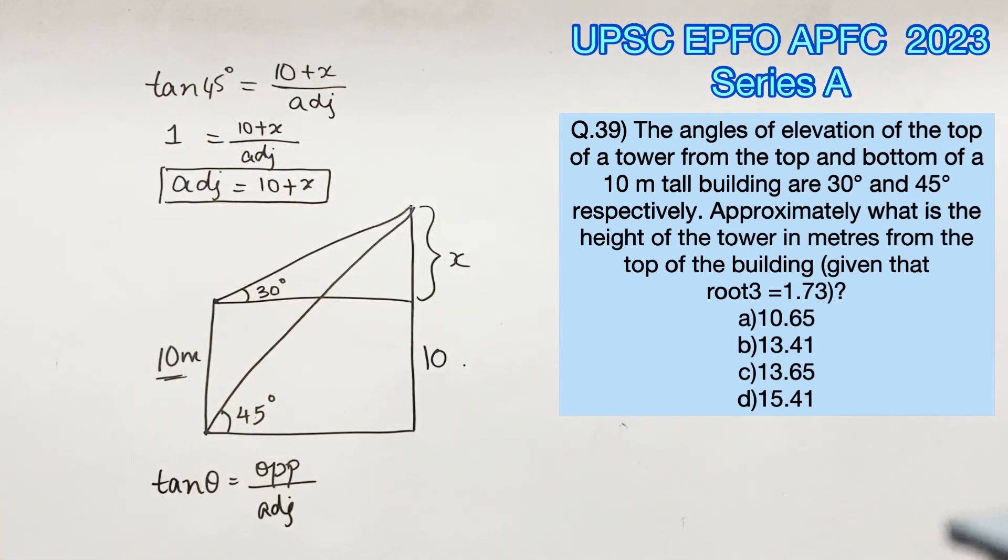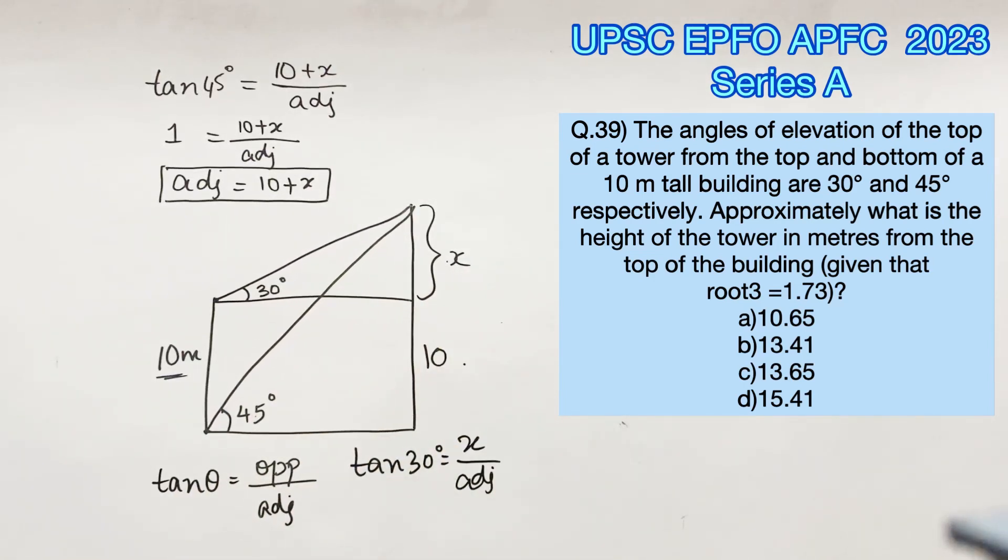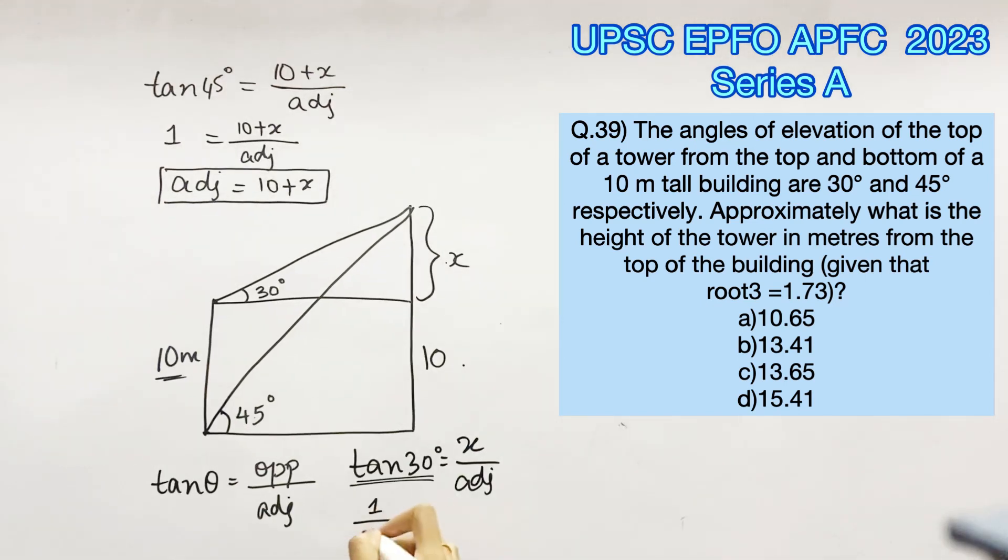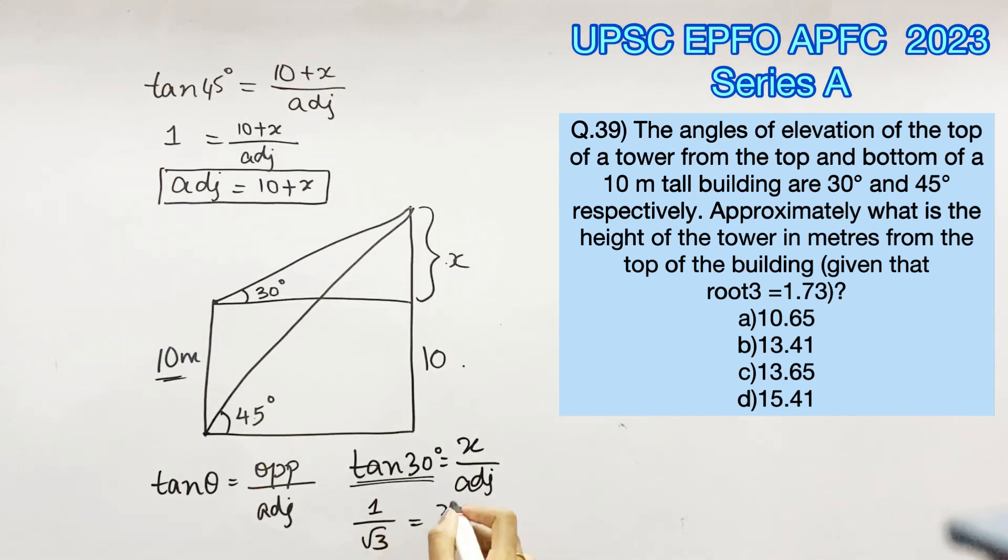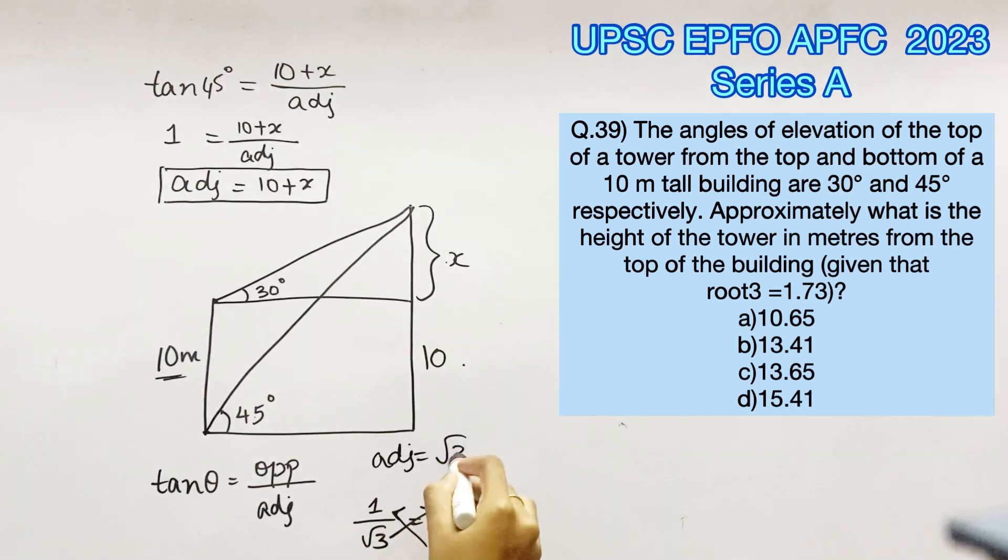Now let's consider the small triangle. Tan 30 equals opposite which is x by adjacent. Value of tan 30 is 1 by root 3, so equating this for adjacent we get adjacent equals root 3 x. The question suggests that we take the value of root 3 as 1.73, therefore adjacent equals 1.73 x.